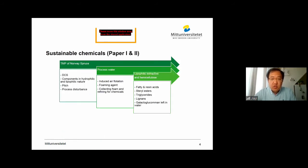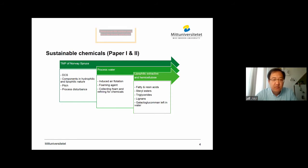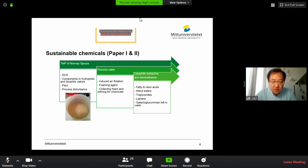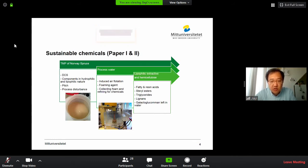The source of the sustainable chemicals in my work comes from the thermomechanical pulping of Norway spruce. Thermomechanical pulping is a very well-known process. During the process, dissolved and colloidal substances are formed, which are hydrophilic and lipophilic in nature. They would aggregate to form pitch, which would later cause huge process disturbances and inferior product quality. Our approach to solve the problem is to use induced air flotation together with a foaming agent — DOTEC — to collect the foam and refine the chemicals.